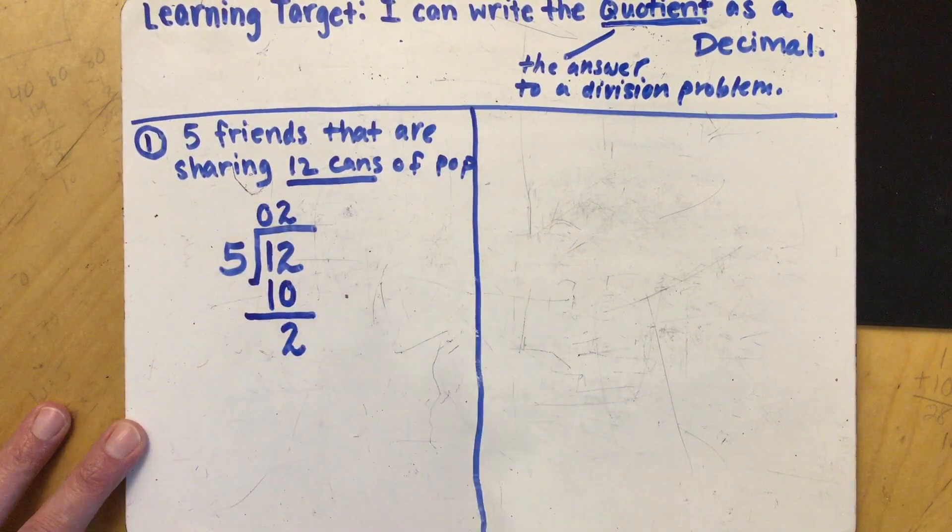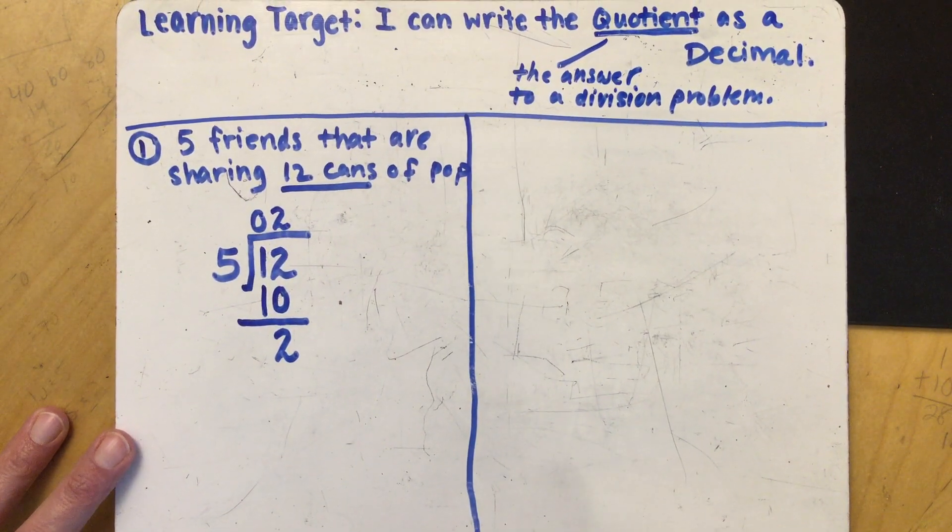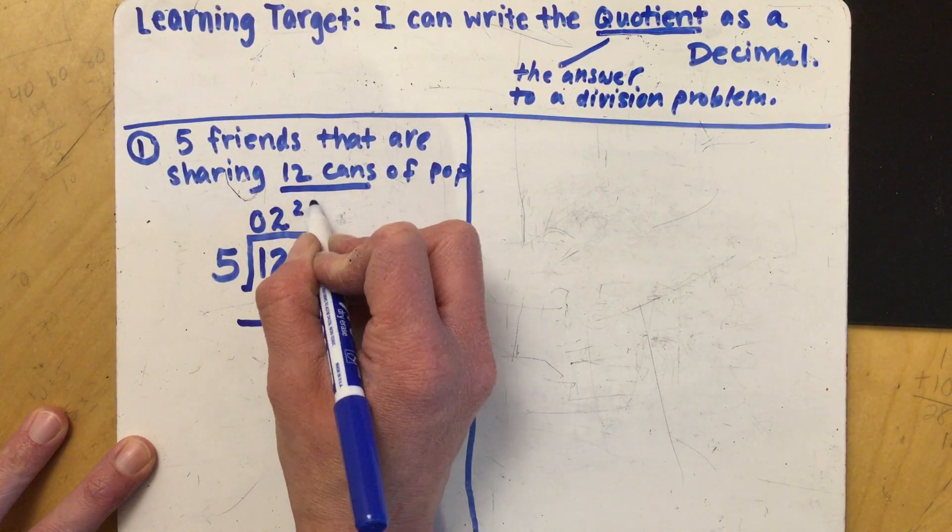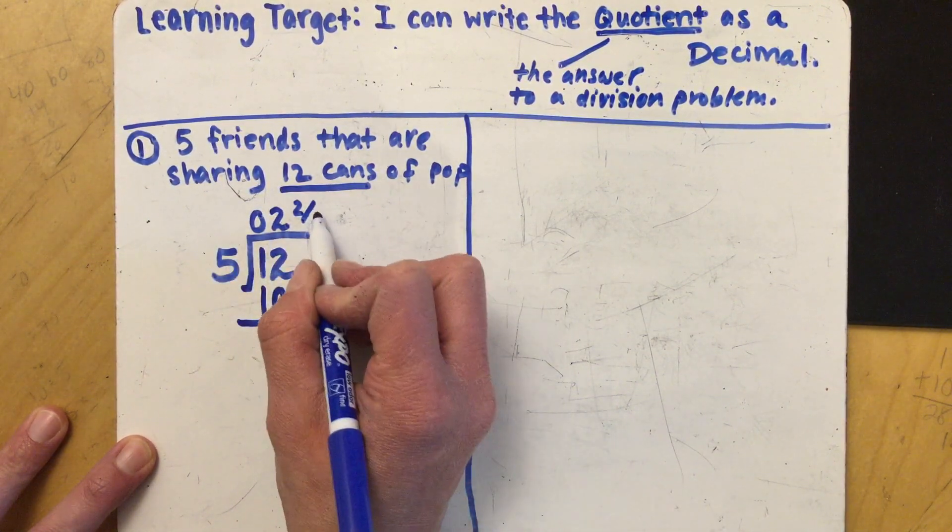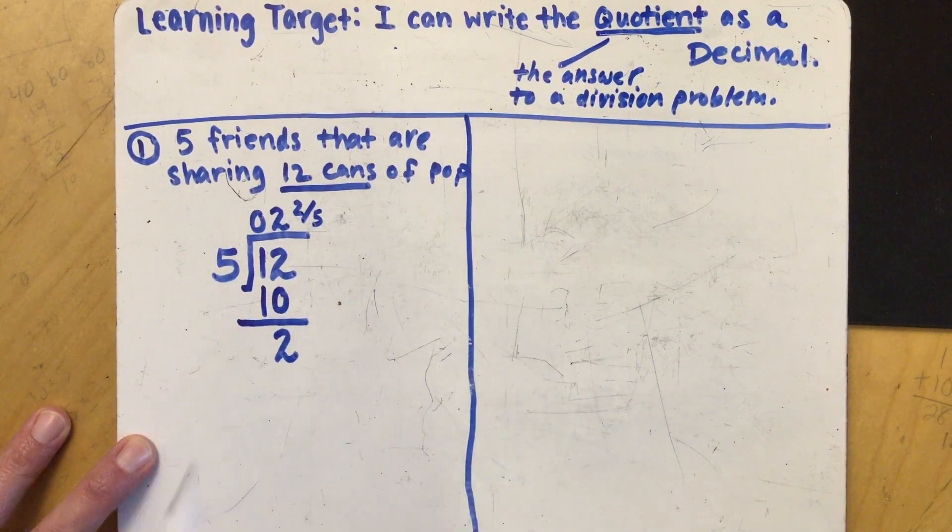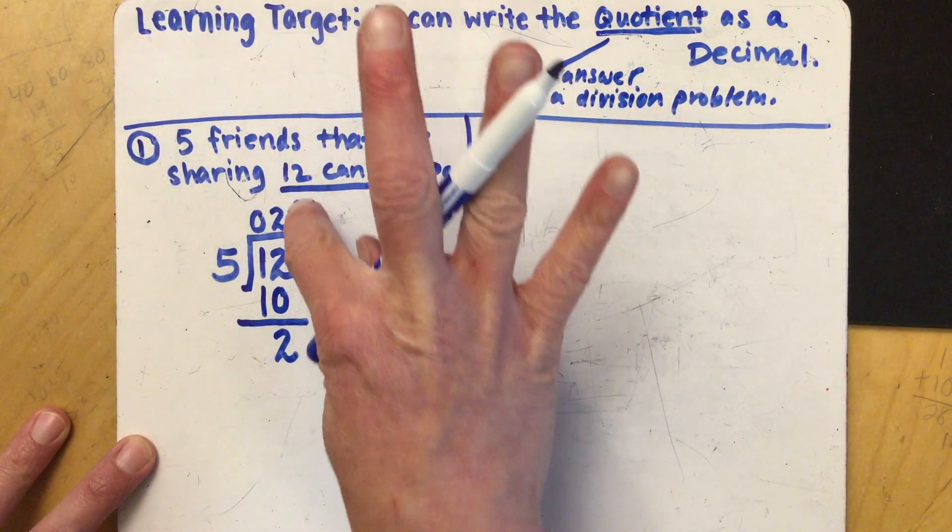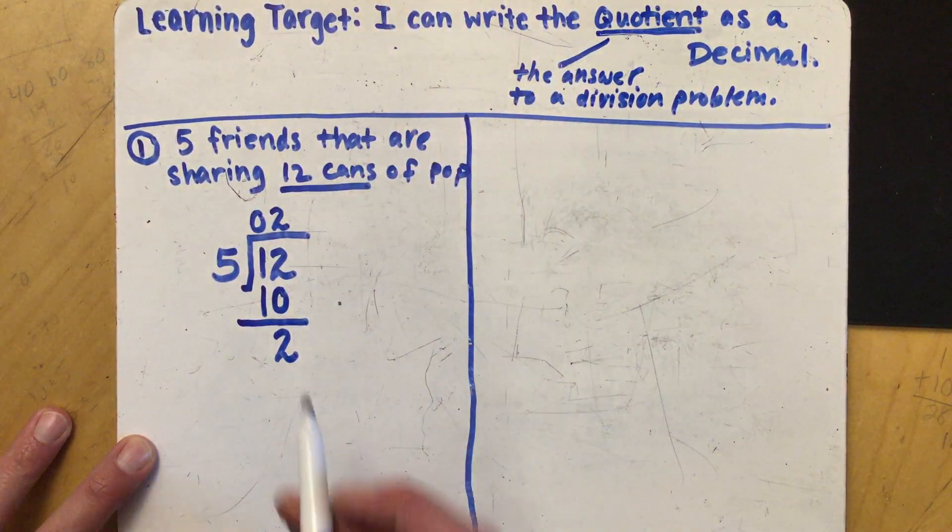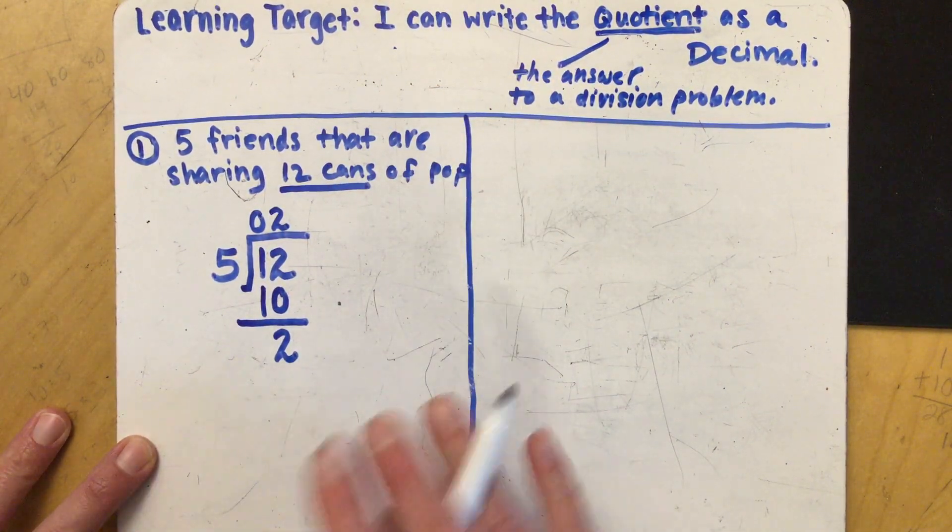Or if you've previously watched the video on how to write the quotient as a fraction, you know that this now becomes your remainder becomes your numerator and your denominator becomes what we divided by. Today we're going to work on decimals.